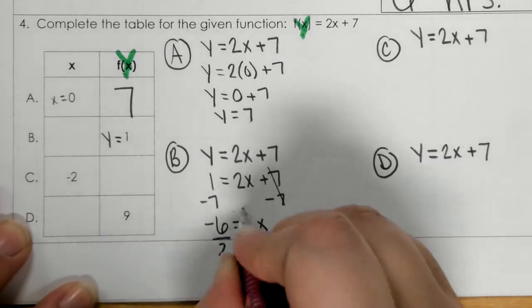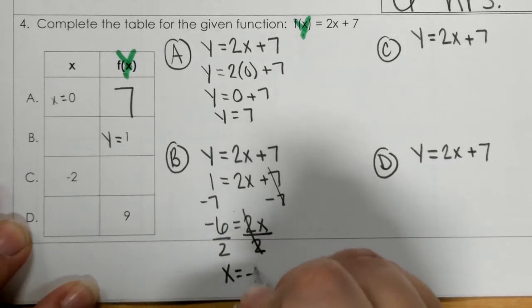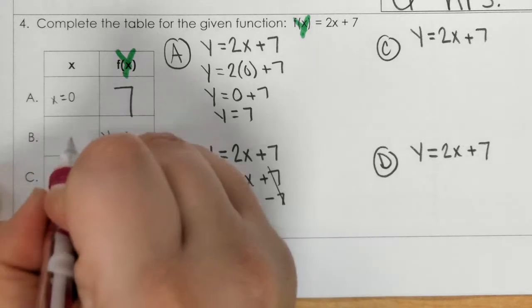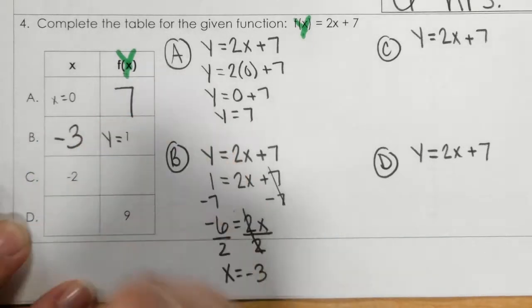So, I will subtract 7, divide by 2, and x equals negative 3. So now, that x needs to go over here in the x column. x is negative 3.